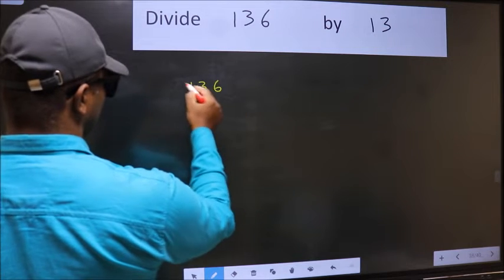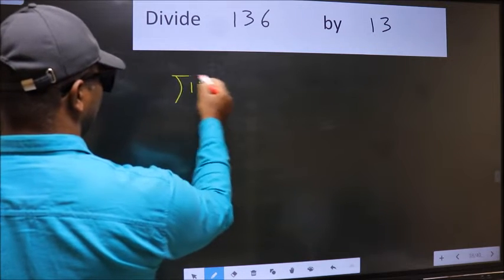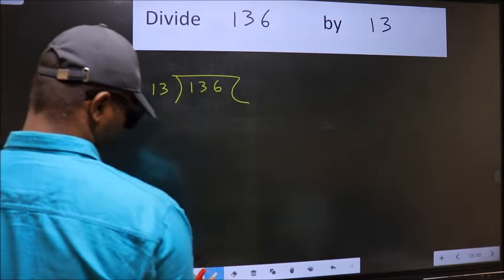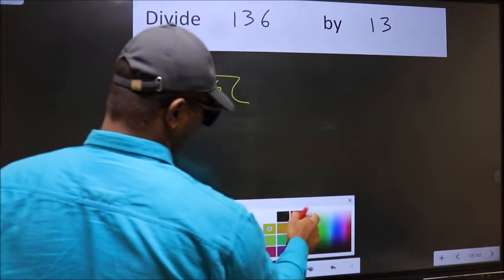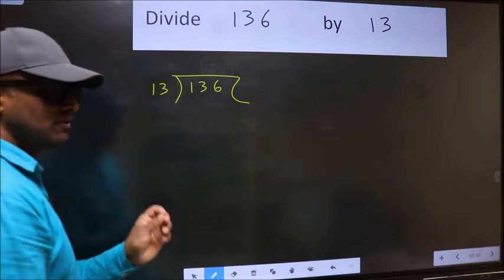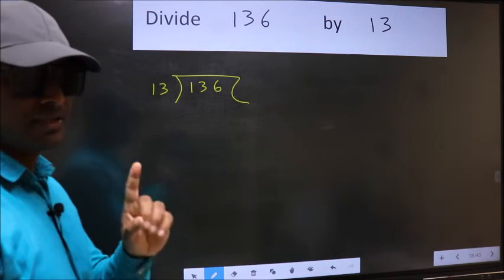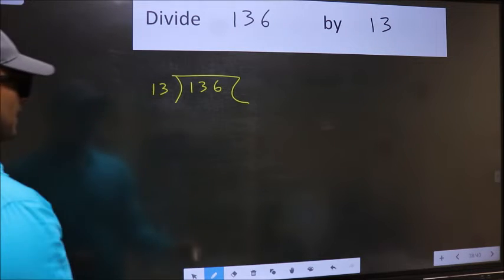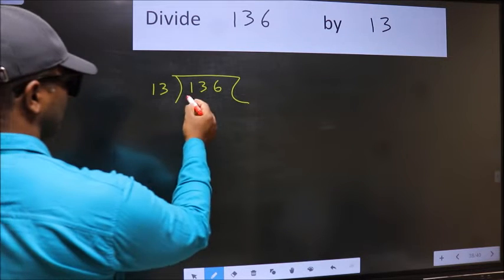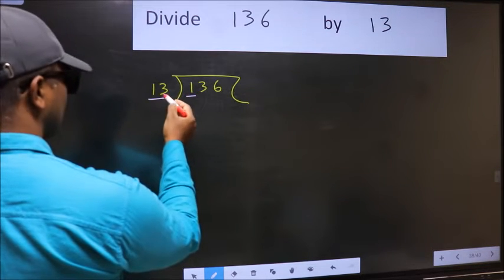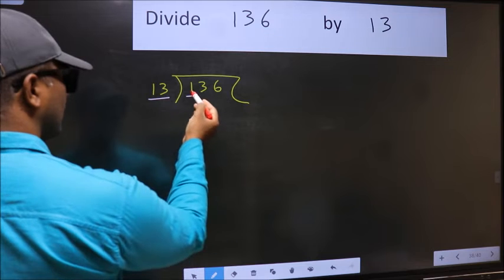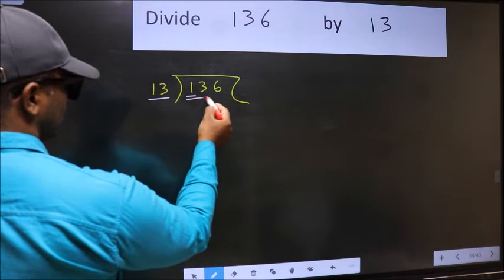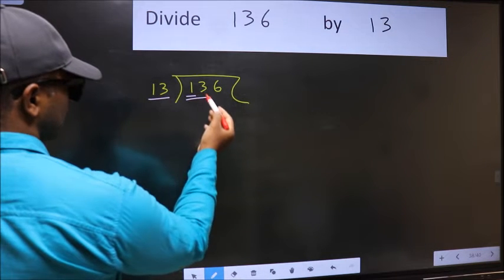136 and 13 here. This is your step 1. Here we have 1 and here 13. 1 is smaller than 13, so we should take two numbers: 13.